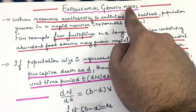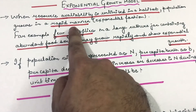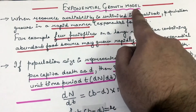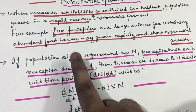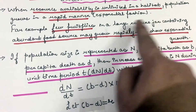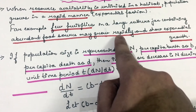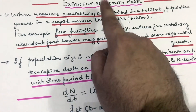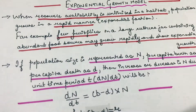Now let us study the exponential growth model. When resource availability is unlimited in a habitat, the population grows in a rapid manner — that is, it grows exponentially. So in the exponential growth model, resource availability is unlimited, due to which the population grows very rapidly. For example, if we take fruit flies in a large culture jar with abundant food resources, the population of fruit flies would increase rapidly, showing exponential growth.